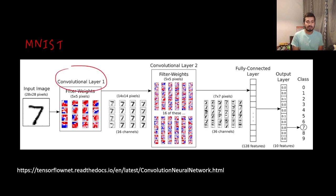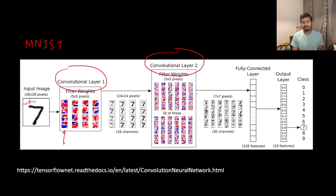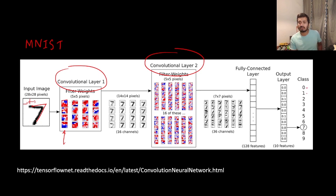Convolution — there is a filter. You scan left to right. You try this filter across the input. The filter is applied step by step across the image.